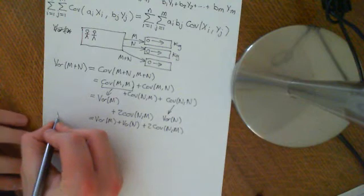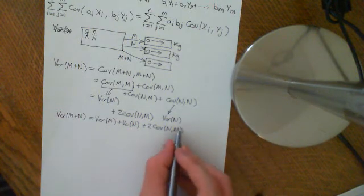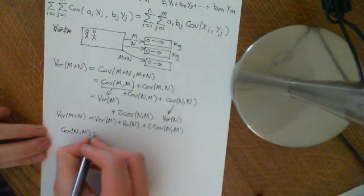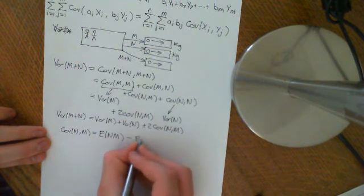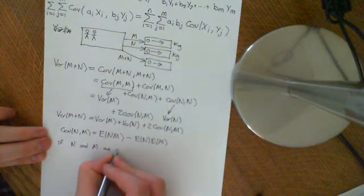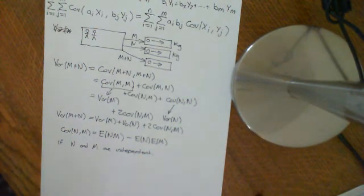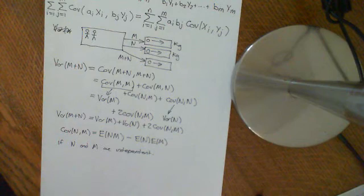In general, the variance of m plus n is not just the variance of m plus the variance of n — but if the covariance term equals zero, then it would be true. The covariance of n with m equals the expected value of n times m minus the expected value of n times the expected value of m. Now, let's say that n and m were independent — i.e., your bodily mass does not affect the mass of your clothes. Obviously that's not really true since a bigger body mass generally means bigger clothes, but let's assume n and m are independent.